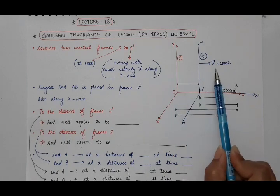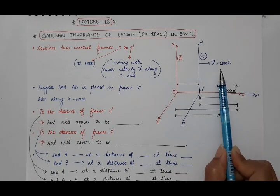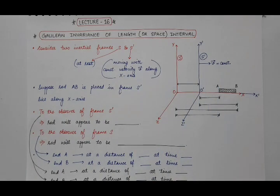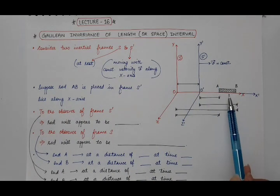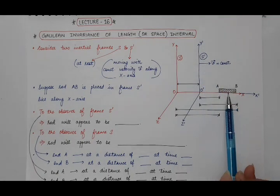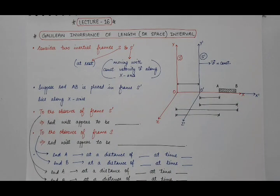Any observer on the S' frame will also be moving with respect to frame S with velocity V. And similarly, this rod, as it is placed in the moving frame S', will also appear to be moving with respect to frame S, or with respect to the observer in frame S.